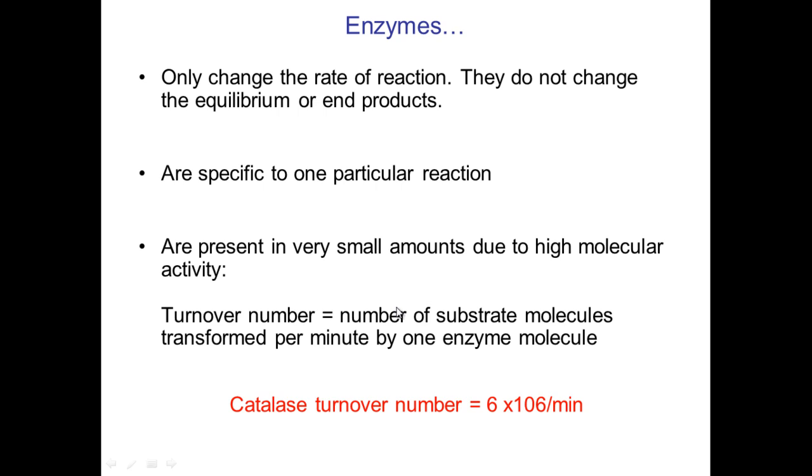This value here, our turnover number, is the number of substrate molecules transferred per minute by one enzyme molecule. In this case, this is catalase which is amongst the quickest enzymes we know. It is made by the liver and this should be 6 by 10 to the power of 6.